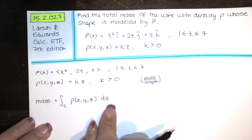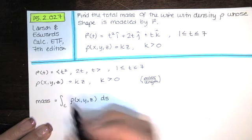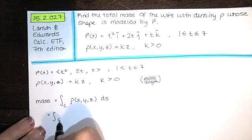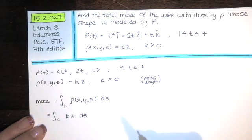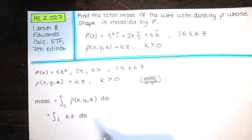Now, in this case, our density function is just KZ, so we're evaluating the line integral of KZ over that curve C.